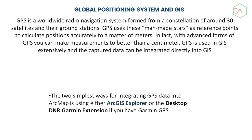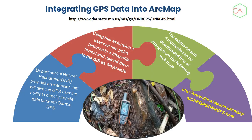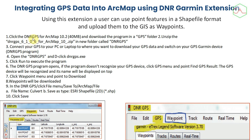This can be done using different extensions. One of the simplest ways is using the DNR Garmin Extension or ArcGIS Explorer. In this training, we are going to show you the DNR Garmin Extension and how it is used. DNR stands for Department of Natural Resources — it is free software. You can download it using the provided link. Once downloaded and installed into your system, you can integrate your coordinate locations directly into ArcMap. Make sure you run and execute the files after downloading.